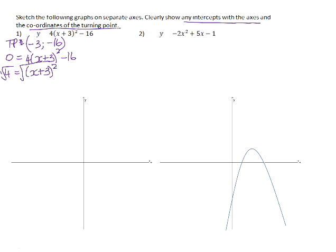Take the square root of both sides. We need to introduce the possibility of a positive or negative solution, so therefore x + 3 is equal to positive 2 or x + 3 is equal to negative 2. Subtract 3 from both sides and we get our x-intercepts to be (-1, 0) and (-5, 0).